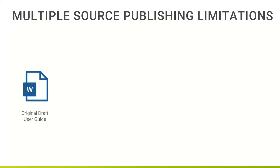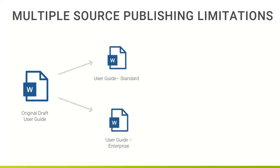If you're writing a training manual for audience A, it's always a training manual for audience A. If it's a user guide for product A, it's always a user guide for product A. What the document is gets baked right into it, and we have no way of really reusing anything. In Word, if I start with a draft user guide, I might send it to the team and they say we need a version for enterprise and standard — so I do a save-as exercise.